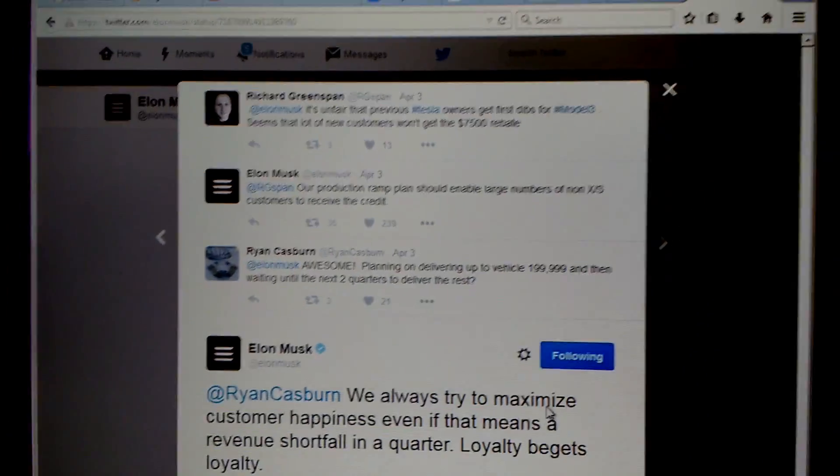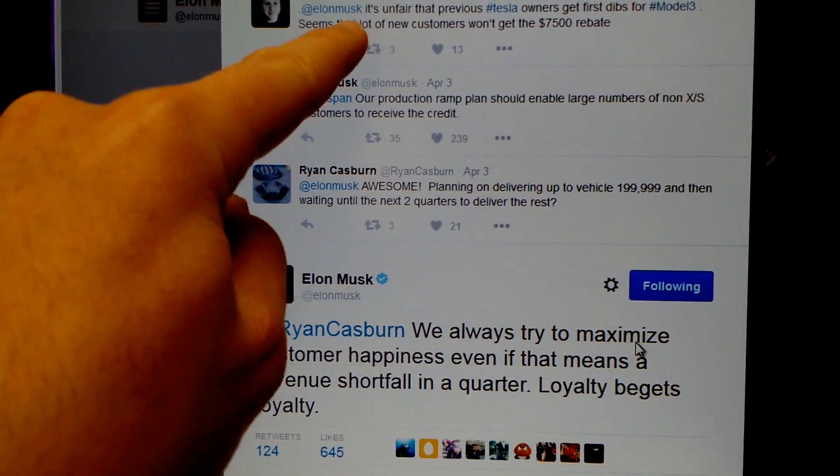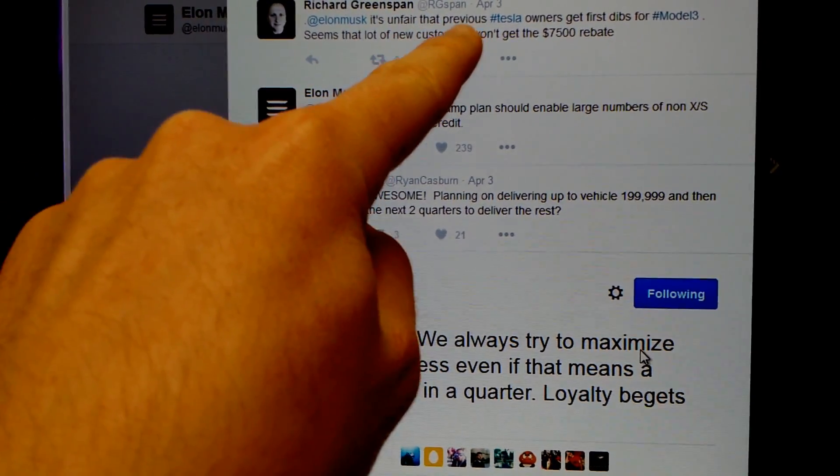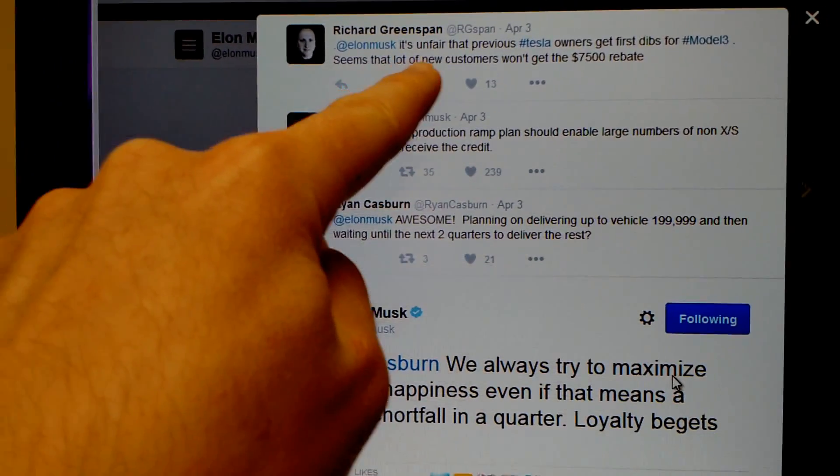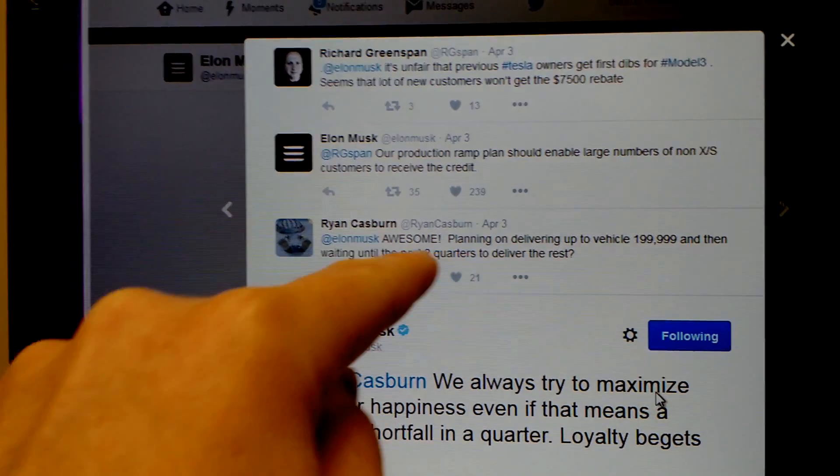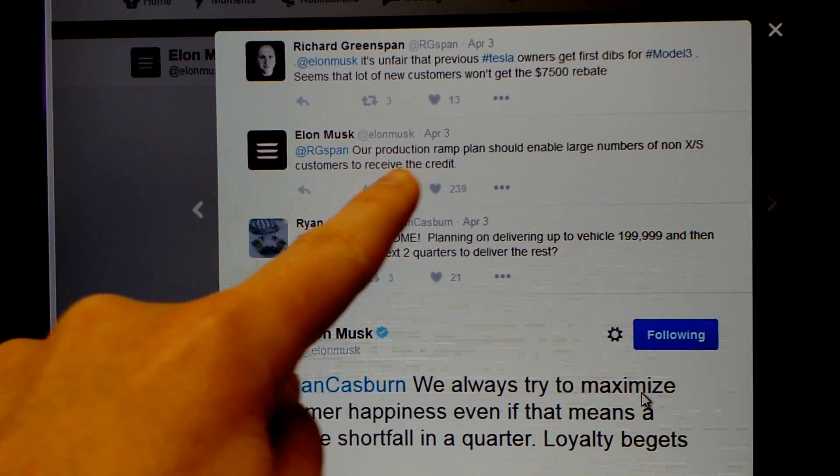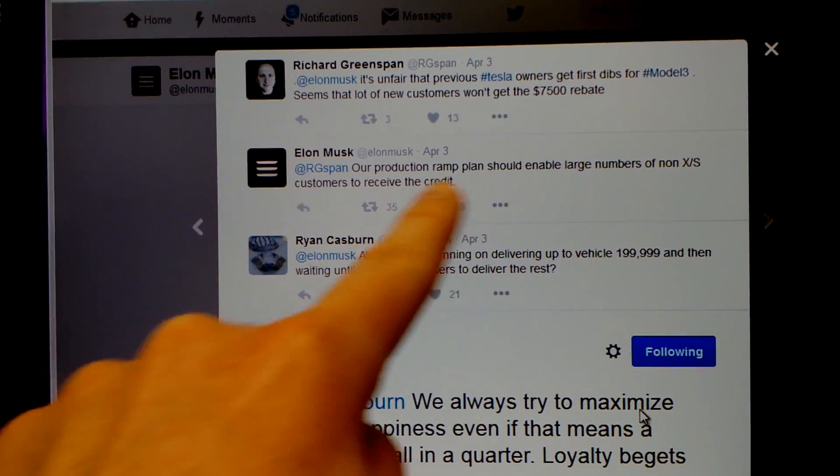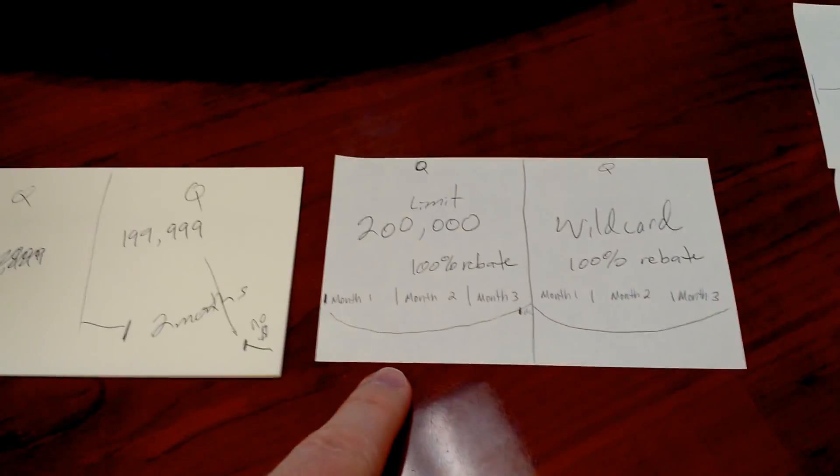Elon Musk actually indirectly referenced this. Somebody says that it's unfair that previous Tesla owners get first dibs and new customers won't get the $7,500 rebate. Then Elon Musk says our production ramp should enable large numbers of non-X/S customers to receive the credit. I think he's talking about this, basically the fact that they will, if they do it correctly, have six months of basically unlimited 100% rebate EV sales.